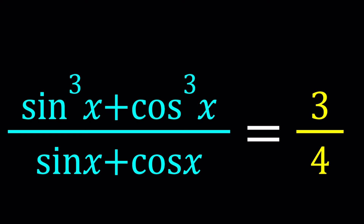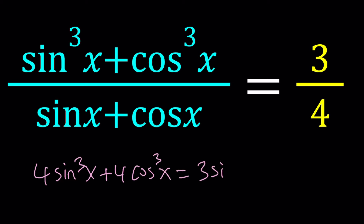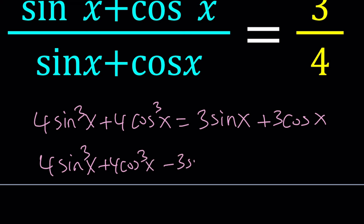We could go ahead and try to cross-multiply here first. That's going to give us 4 sine³x plus 4 cosine³x equals 3 sine x plus 3 cosine x. Then we put everything on the same side: 4 sine³x plus 4 cosine³x minus 3 sine x minus 3 cosine x is equal to 0.